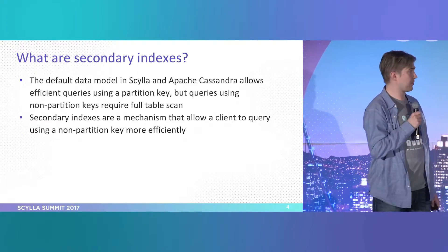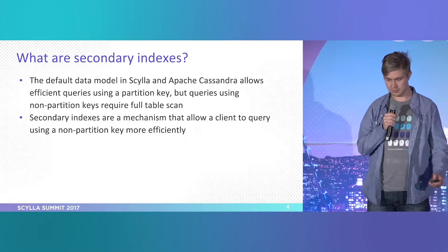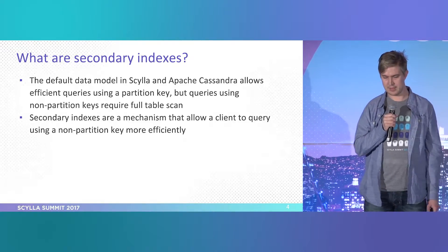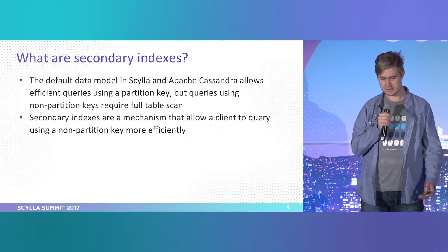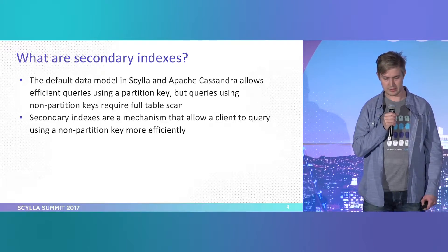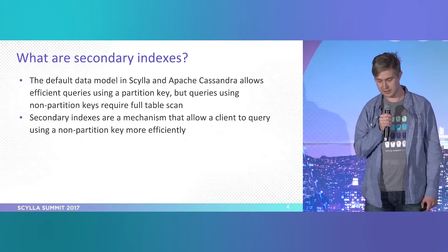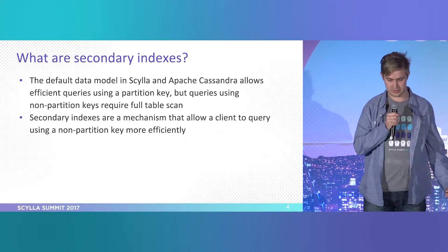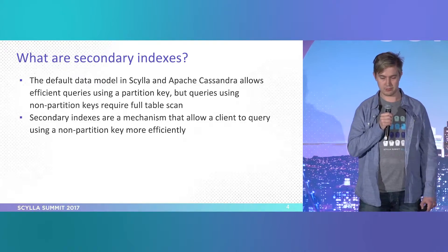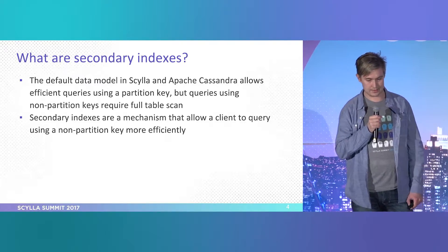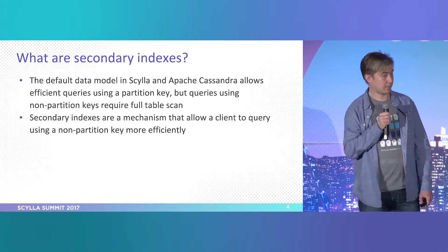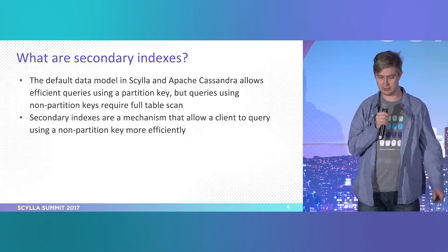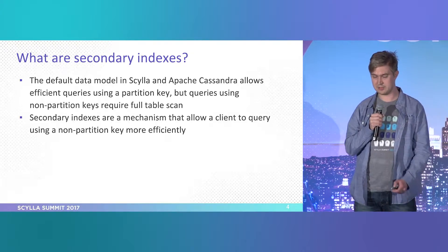So everybody obviously knows the Cassandra and ScyllaDB data model. It allows really efficient queries using partition keys, but queries using non-partition keys require a full table scan. Secondary indexes are basically a mechanism to allow querying using a non-partition key more efficiently.